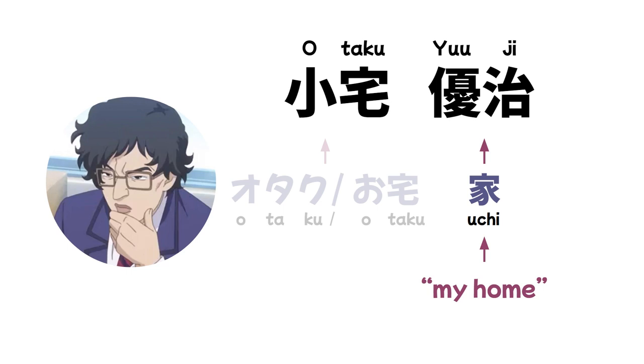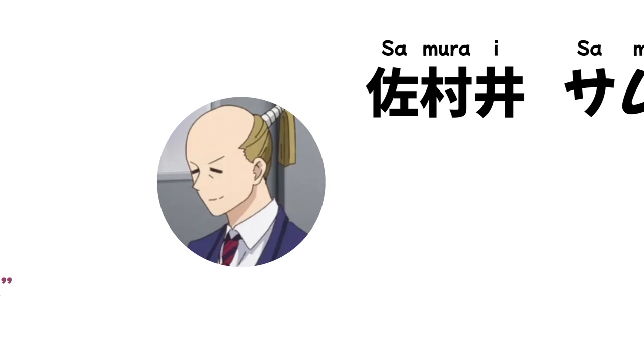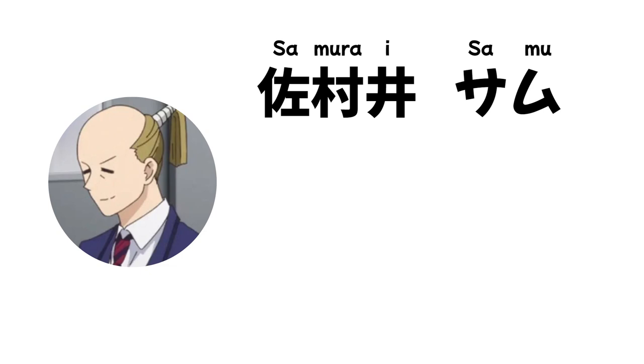One of Yuji's friends is Samurai Samu, or Sam. This is pretty self-explanatory — he looks and talks like a samurai, ending his sentences with 'de gozaru.'